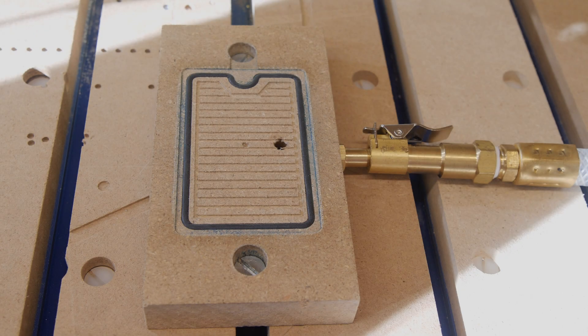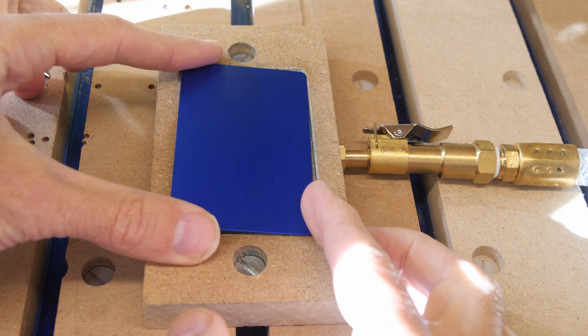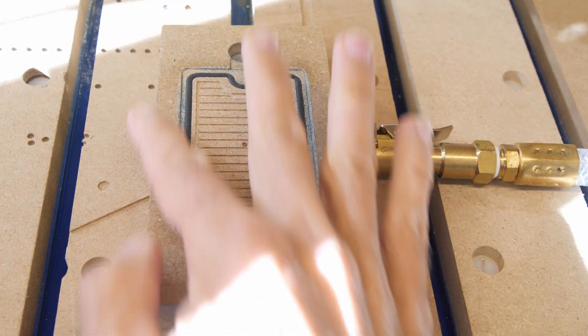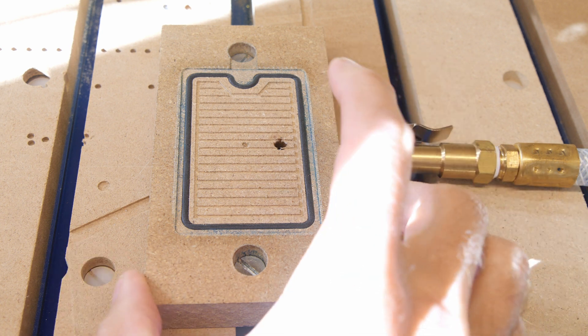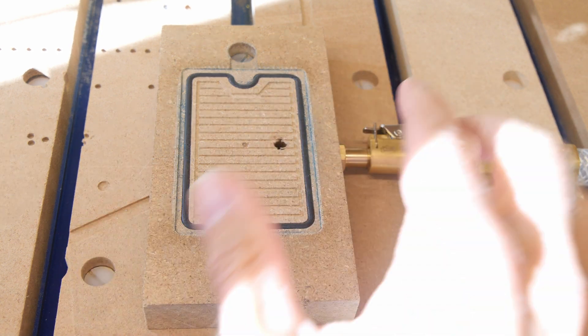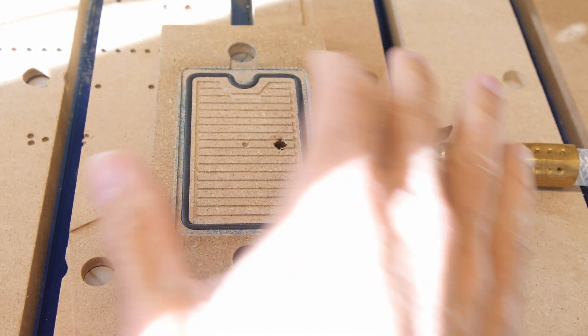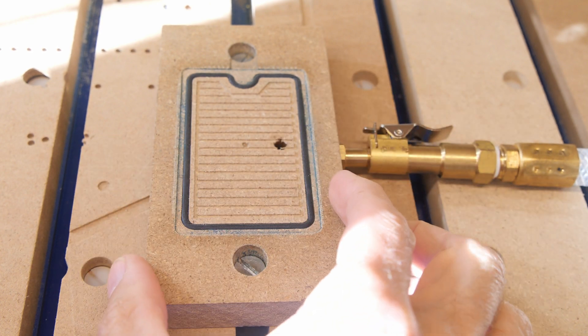Here's the vacuum fixture that I made to hold the cards like this. I made it from MDF, which is, it's cheap, but it's porous, and so to use it for a vacuum fixture, I sprayed it with polyurethane to seal the pores, and that worked pretty well.